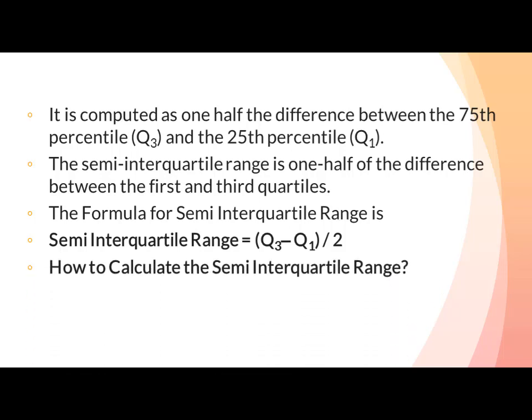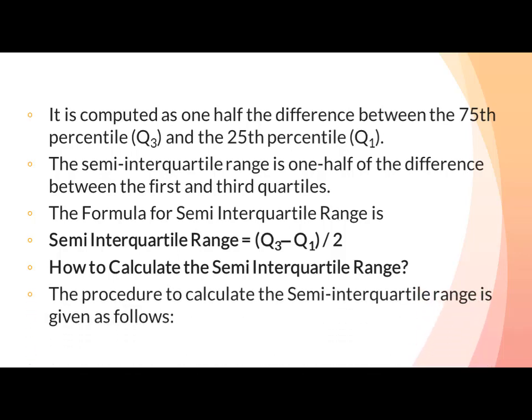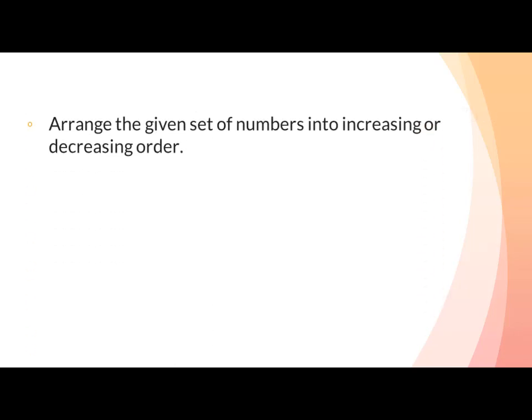How to calculate the semi-interquartile range: the procedure to calculate it is as follows. First, arrange the given set of numbers into increasing or decreasing order — data set کو ascending یا descending order میں arrange کریں گے، سب سے پہلے چھوٹا اور آخر میں سب سے بڑی value۔